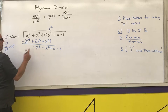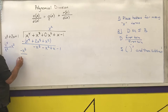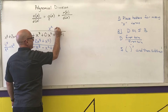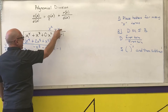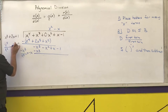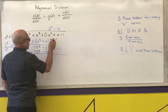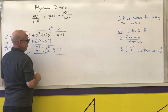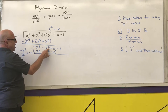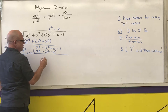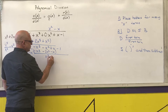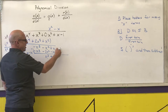Leading term over leading term: negative x cubed over x squared is negative x. Put negative x above the x column and multiply: negative x times x squared is negative x cubed, negative x times 2x is negative 2x squared, negative x times 1 is negative x. Put parentheses and subtract: any number minus itself is 0, negative 1 minus negative 2 is positive 1x squared, and 1 minus negative 1 is 0x. Bring down the next term.